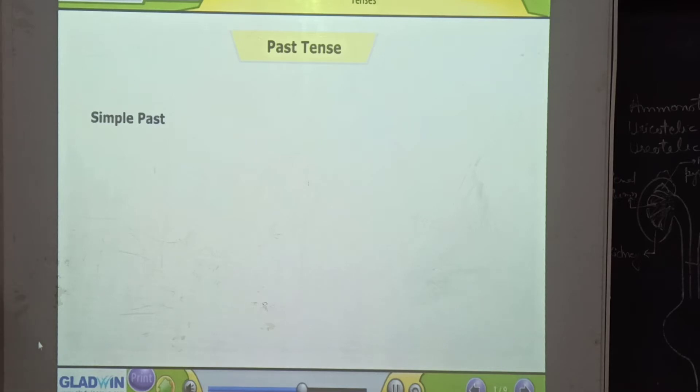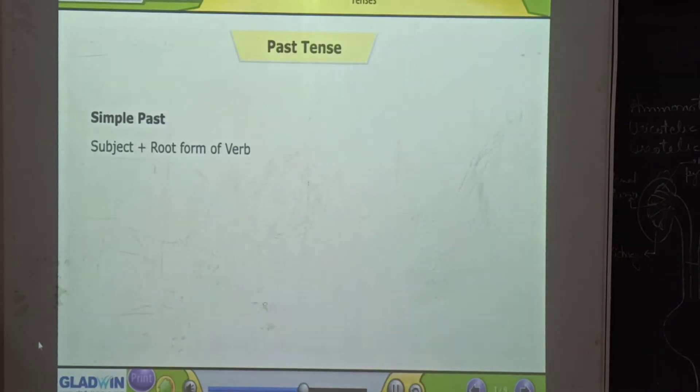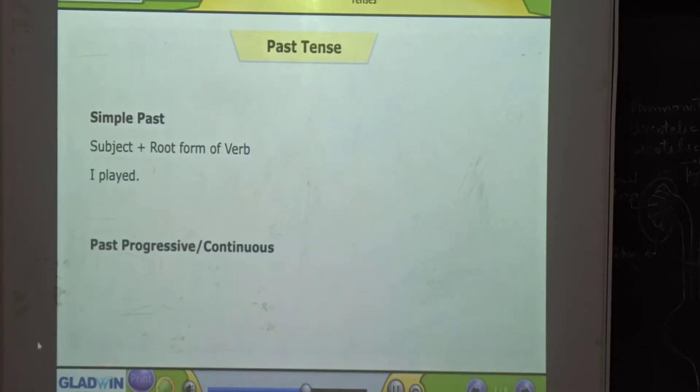Simple past: subject plus root form of verb plus ed. Example: I played. Past progressive or continuous: subject plus was or were plus root form of verb plus ing. Example: I was playing.